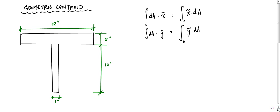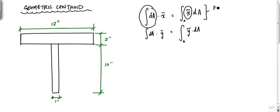If you've taken a class in physics or statics, you've seen this integral dA, which represents the total area, times the centroid is equal to the integral of x times dA. This calculation for the centroid is called the first moment of area, because you have area times a distance.